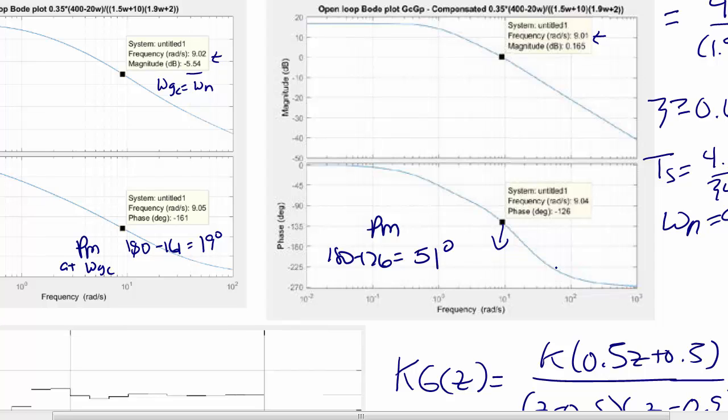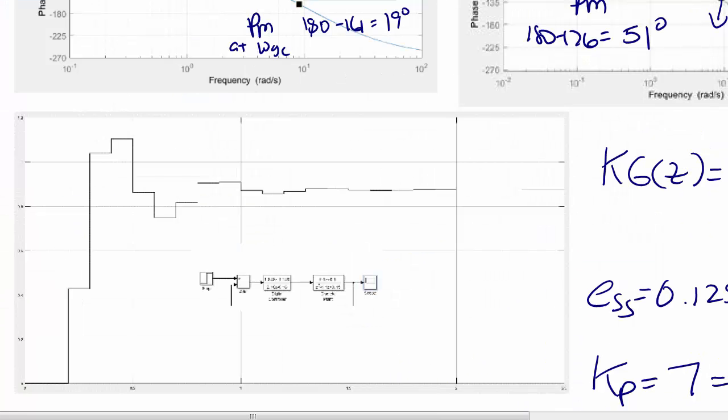To check our other specifications, we're going to look at the step response. Here's our feedback control system with our digital controller and our plant. Our specification was 20% overshoot. We do have a little less than a 20% overshoot. Our other specification was a steady state error less than 12.5%, and it appears that we are meeting that requirement here.